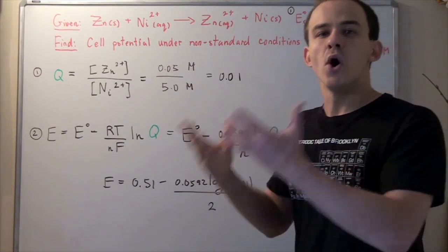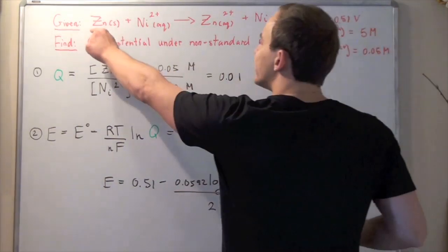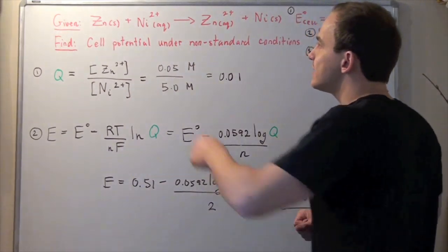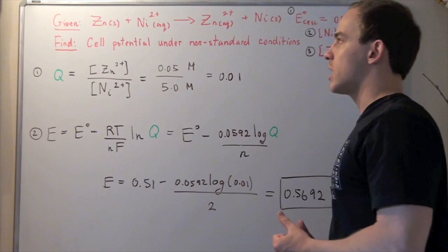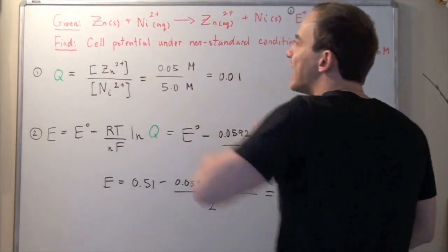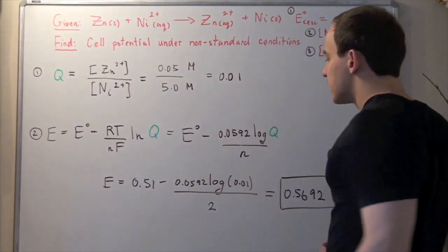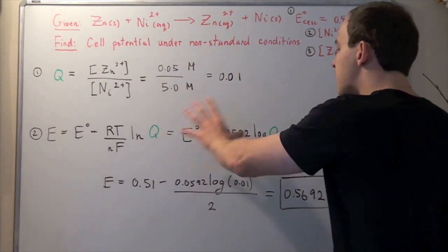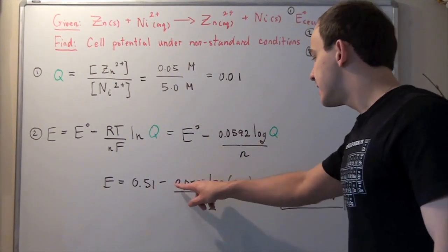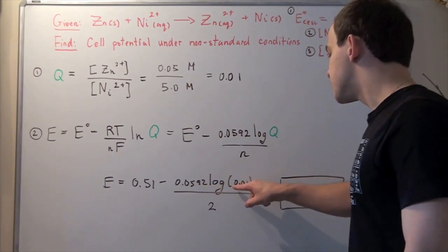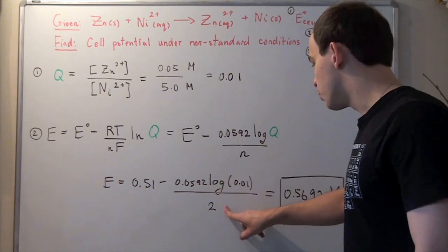N is the number of moles of electrons released by this equation. Notice that zinc solid gets oxidized and releases 2 moles of electrons, which nickel accepts to be reduced into nickel solid. So our n is 2. Let's plug all our values into our formula: 0.51 volts minus this number times log of 0.01 divided by our moles, 2.